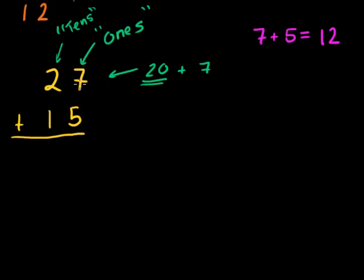So what we do is we say 7 plus 5 is equal to—and now this is a new thing—we want to write the 12. 7 plus 5 is 12, but we just write the 2 here and we carry the 1. We wrote the 2 there, but we put the 1 up here.